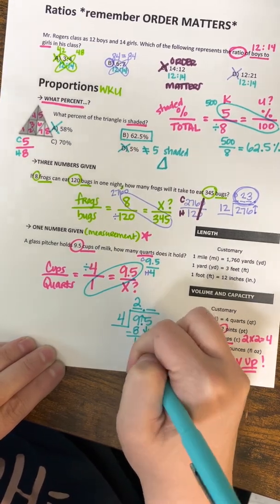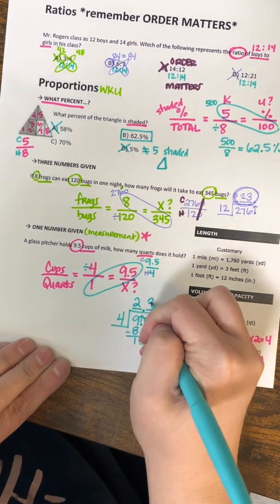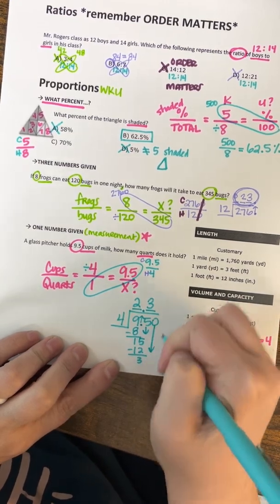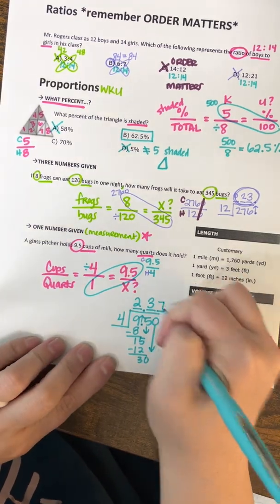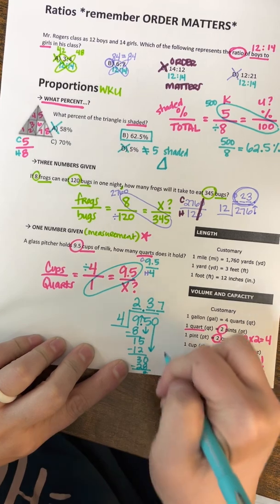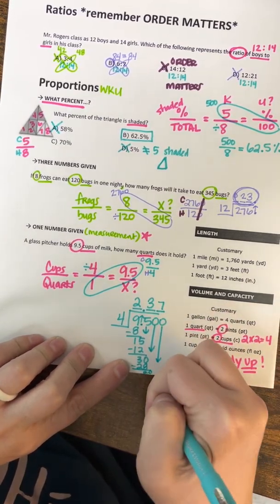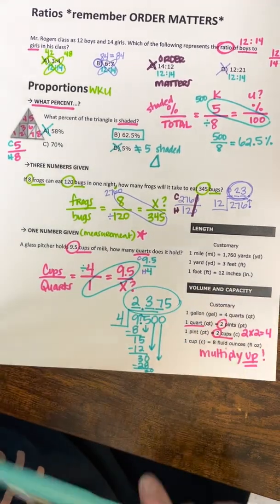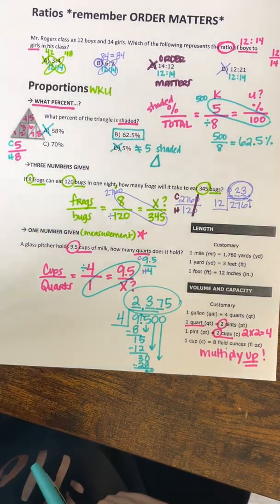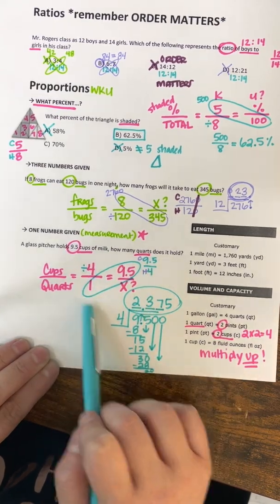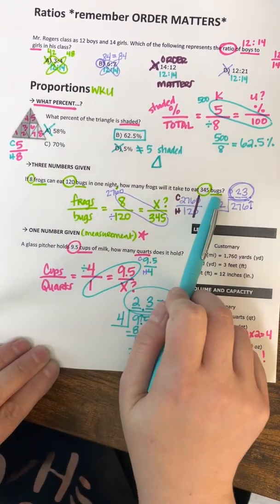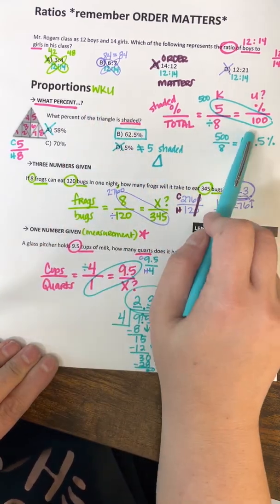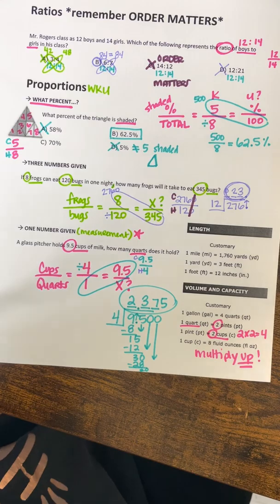Four goes into 9 two times. We get 1, bring down the 5. Four goes into 15 three times. That's 12. We have 3 left over. That means we're going to need a donut, which means I need another blank. Four goes into 37 times, which will leave 28 with a 2. I need another donut. And four goes into 25 times. So how many quarts? It holds about 2.375 quarts. So again, one number given with cups to quarts, that's going to be a measurement conversion. Three numbers given, two labels matching, that's just your normal WKU. And then when it says those keywords, what percent, you need that percent over 100. So those are the three WKUs we've learned and how to differentiate.